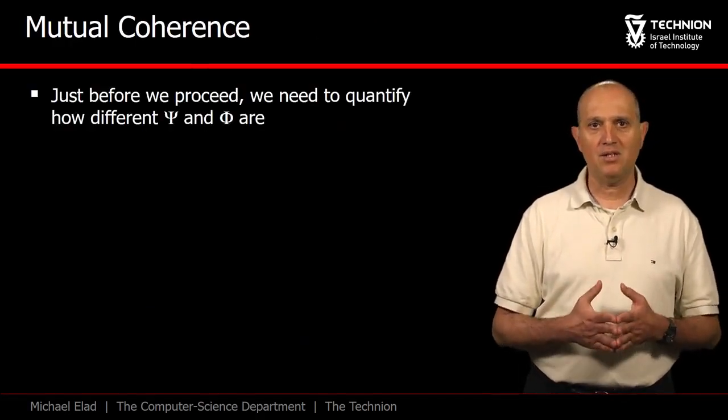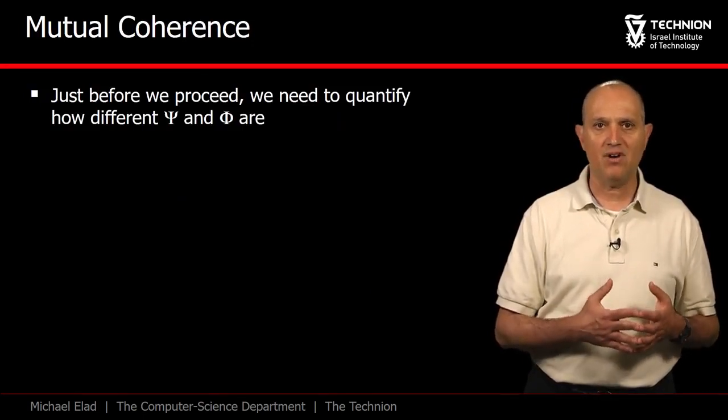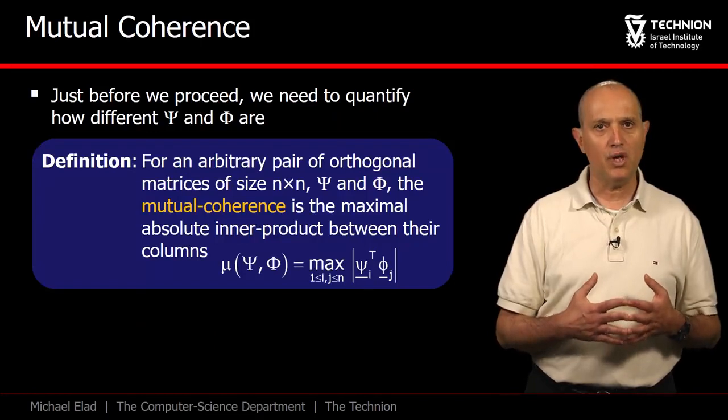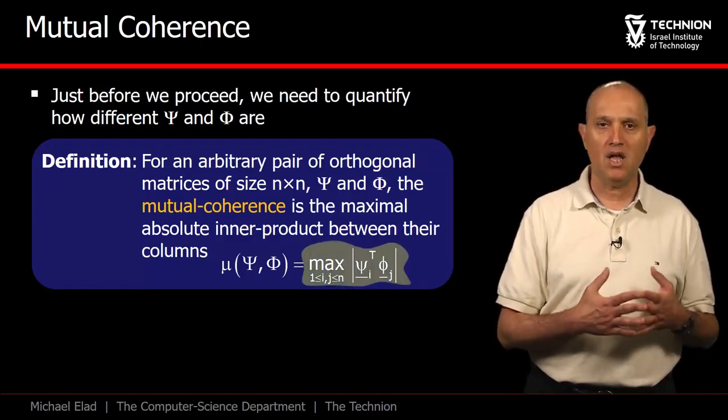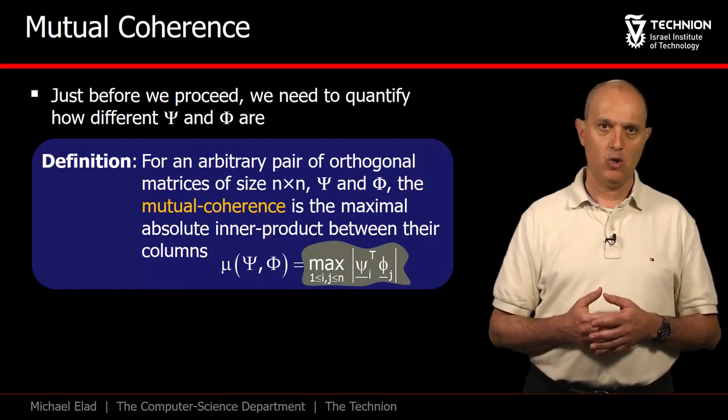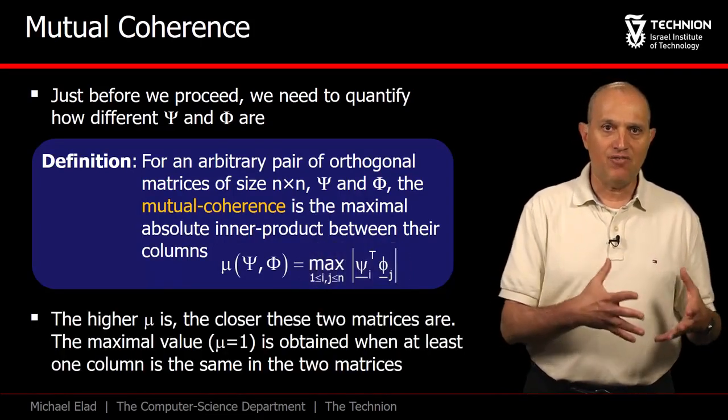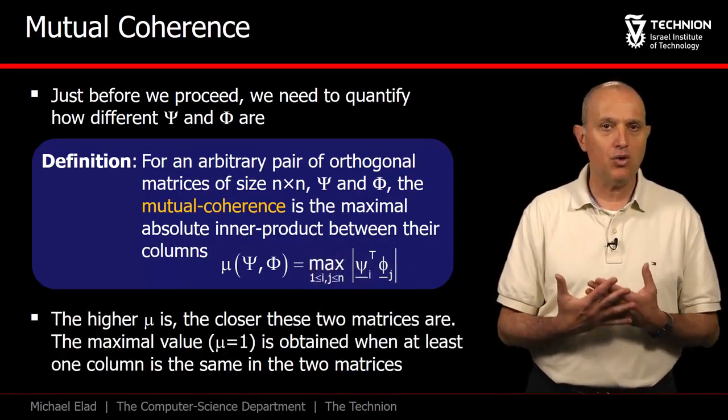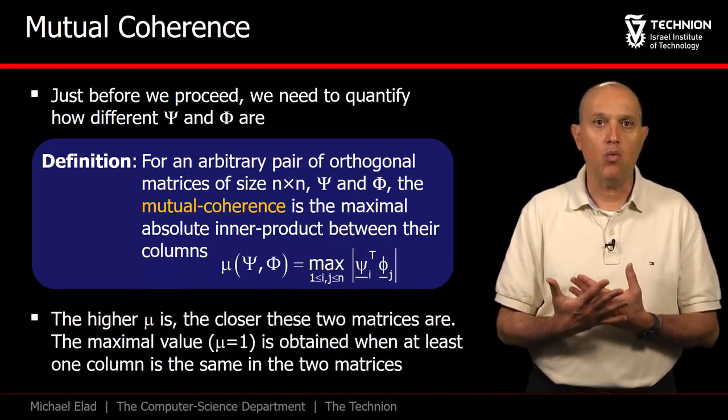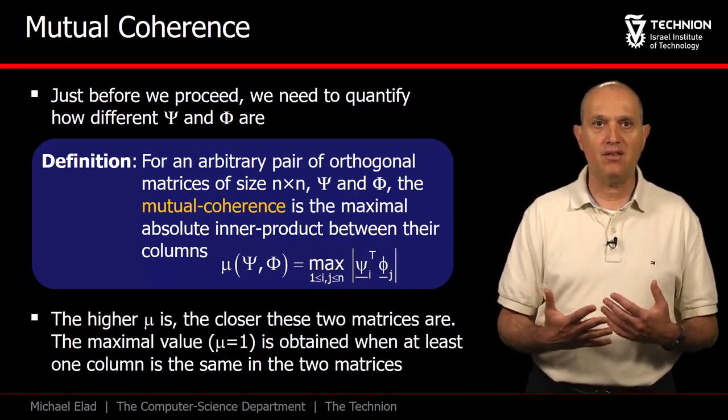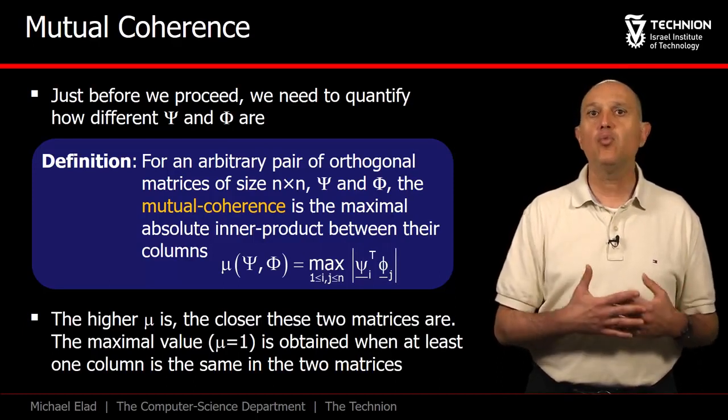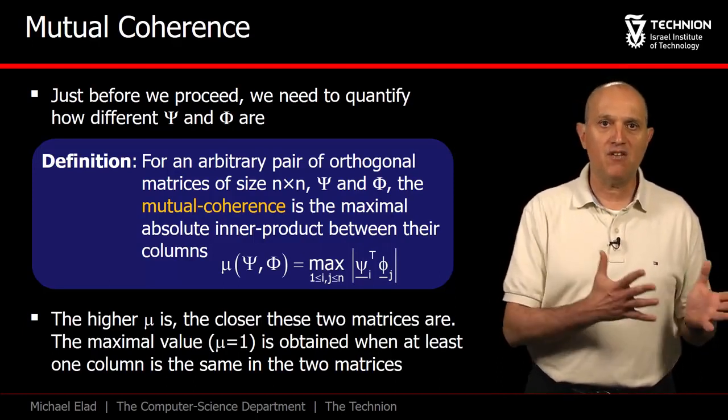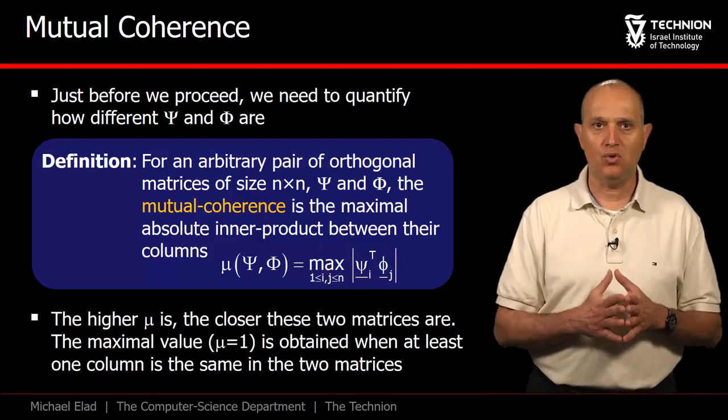A fundamental tool for the analysis that follows is the quantification of the distance between psi and phi. We define the mutual coherence as the maximal absolute inner product between columns taken from psi and phi. Observe that, if psi and phi share a common column, this coherence, denoted as mu, becomes 1. This is, in fact, the maximal possible value of mu. And, as we will shortly see, it stands for the worst situation in which psi and phi are too close to each other.